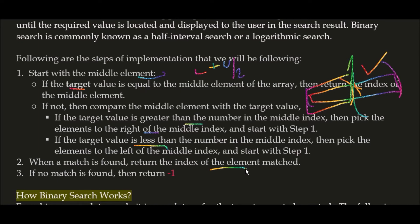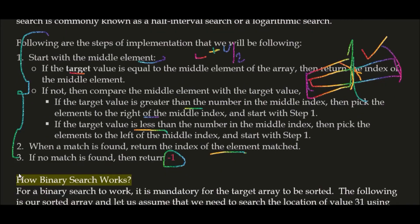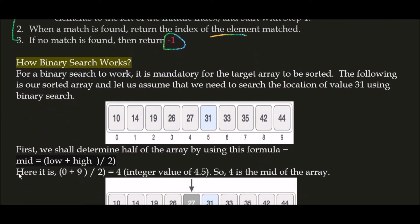If your match is not found in the particular list, you return minus one. So this is the implementation part of binary search. Now let's clear this even better with the help of an example. So now let's move to how binary search works.